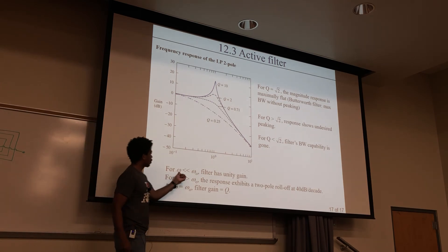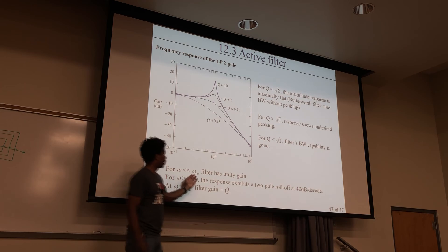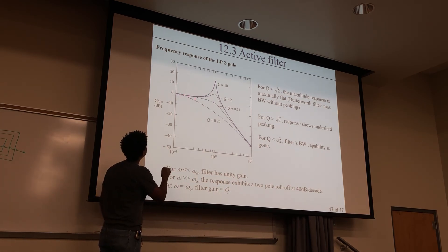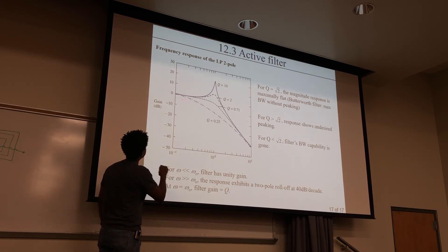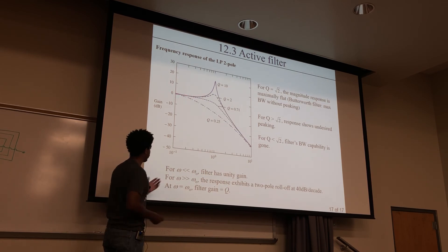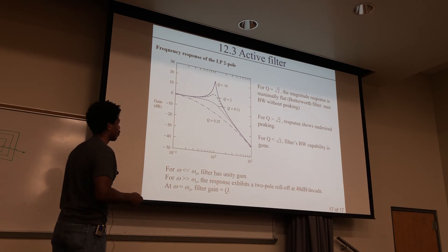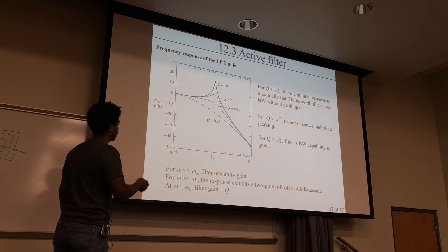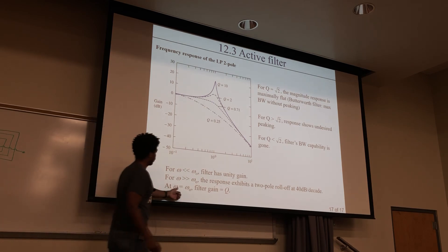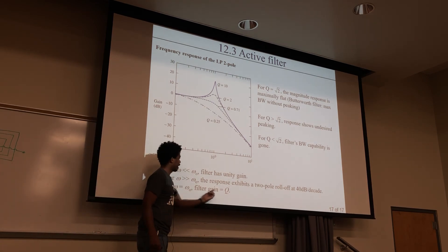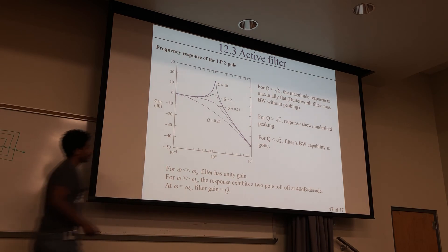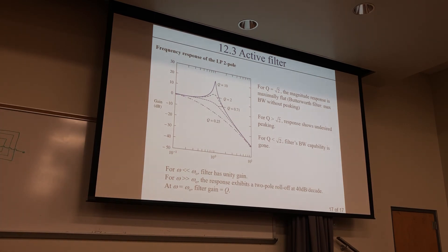For frequency much greater than omega_0, the response exhibits a two-pole roll-off at 40 decibels per decade. And at omega equal to omega_0, the gain is Q. All right, that's it for today.